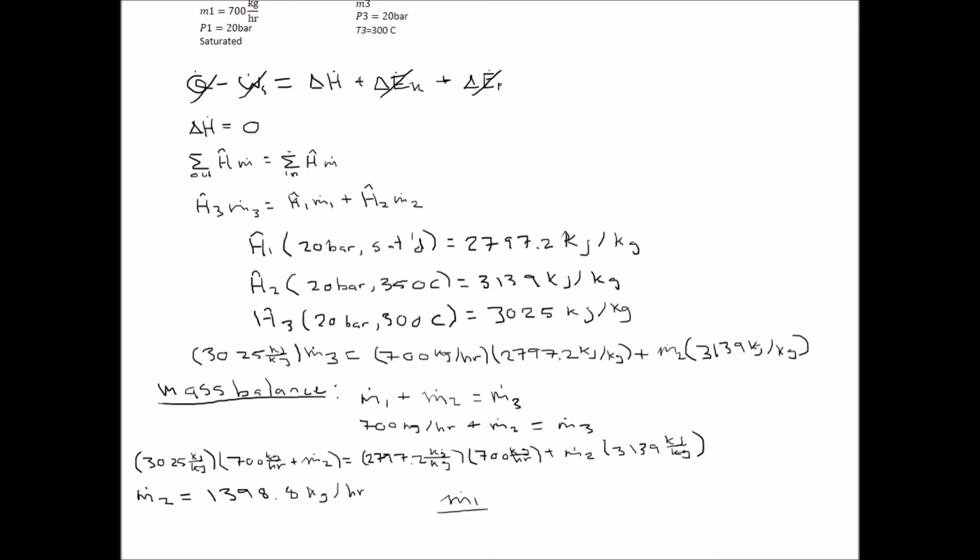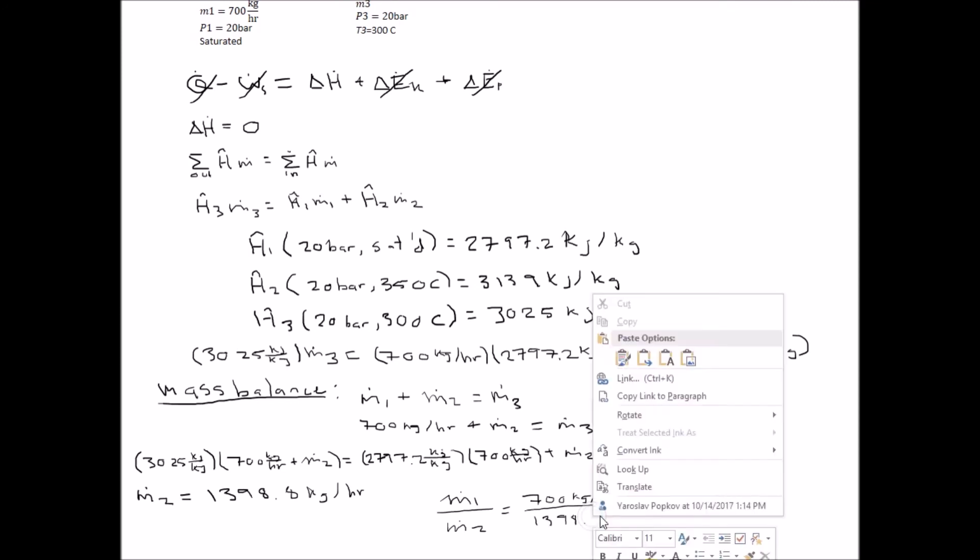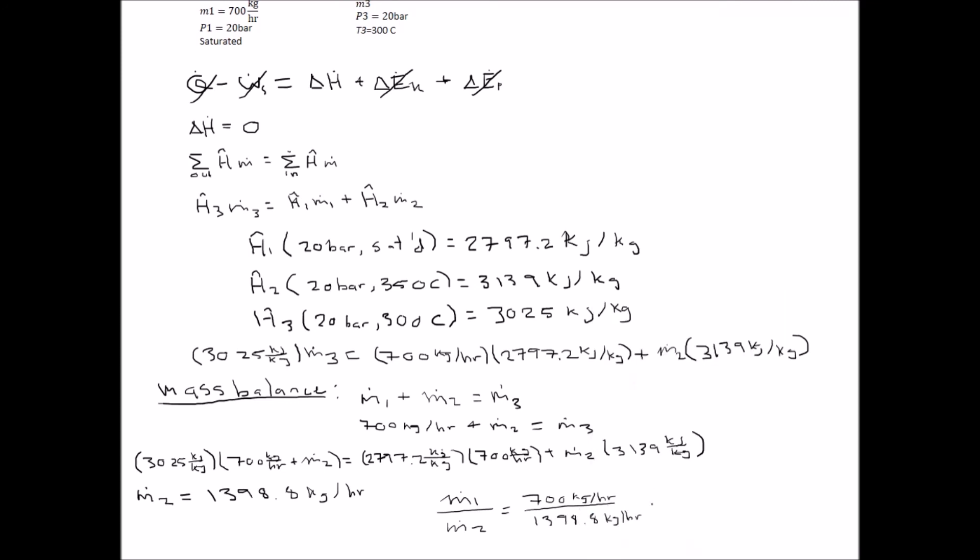Now that we found the mass flow rate of stream two, we can finally find the ratio between the saturated steam flow and the flow of the injected steam, which we find to be about 0.500.